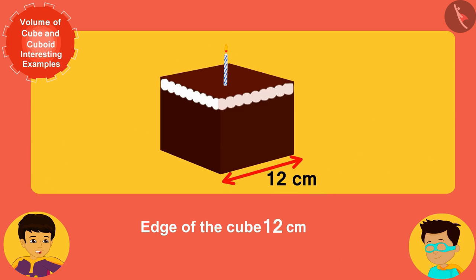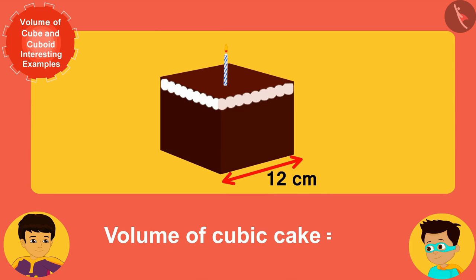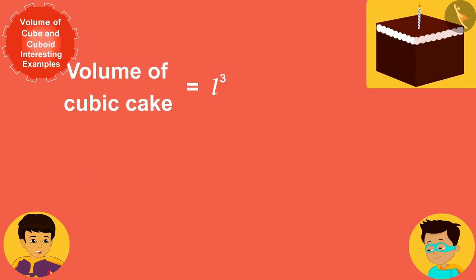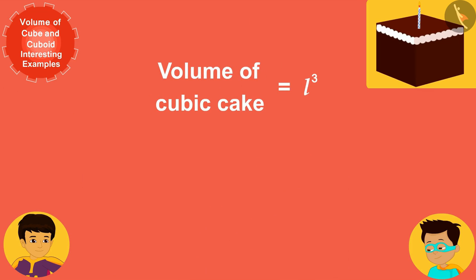As we know, the volume of any cube is equal to L cubed, where L is the measure of the edges of the cube. So if I replace L here with the actual measure of the edges of the cubic cake, that is 12...